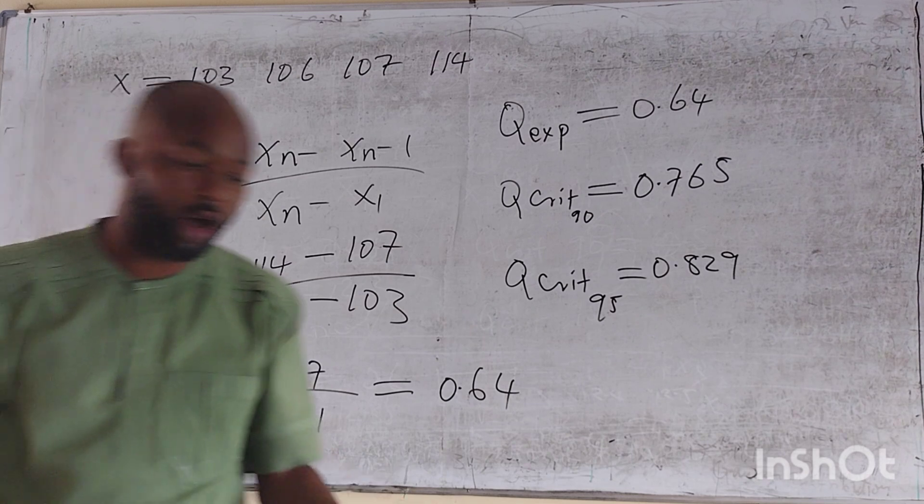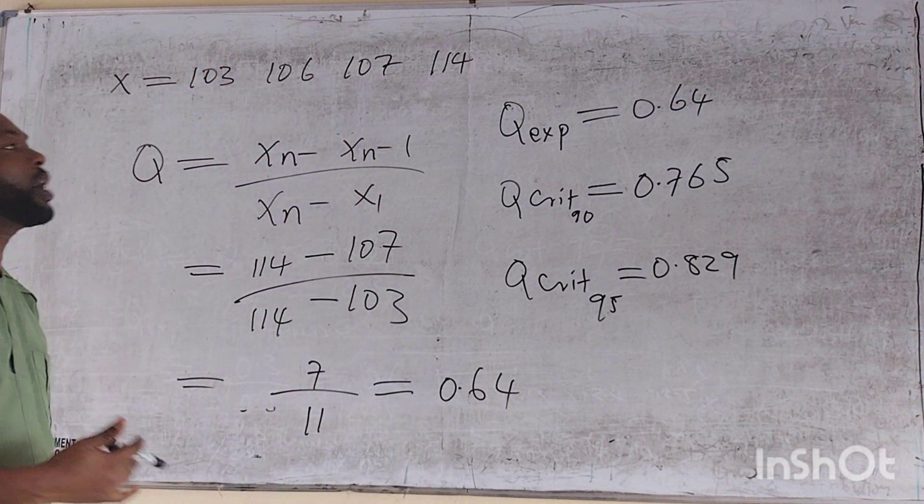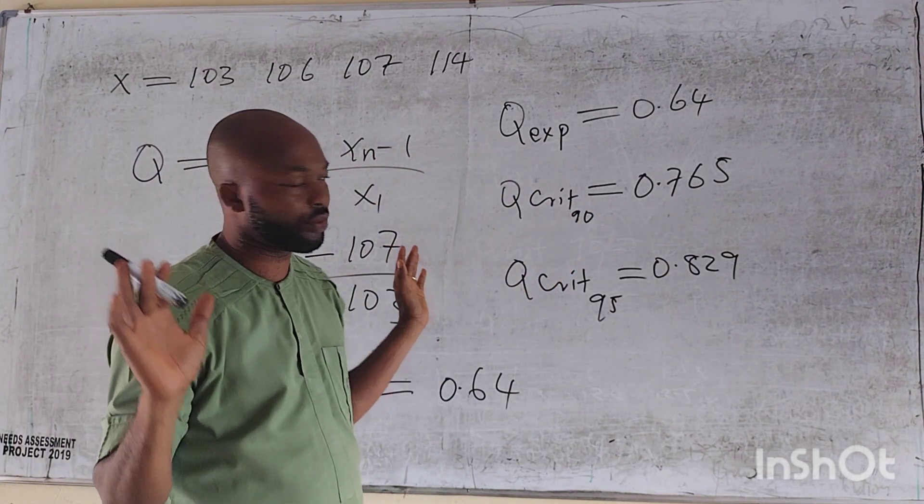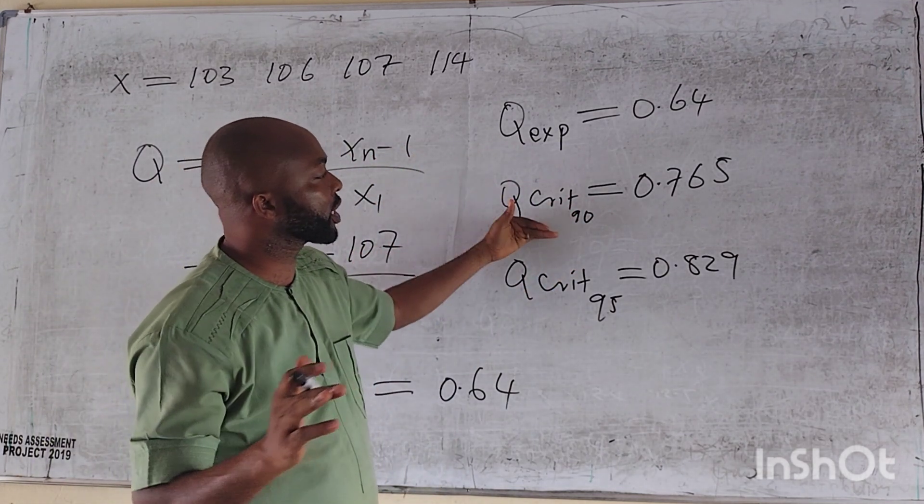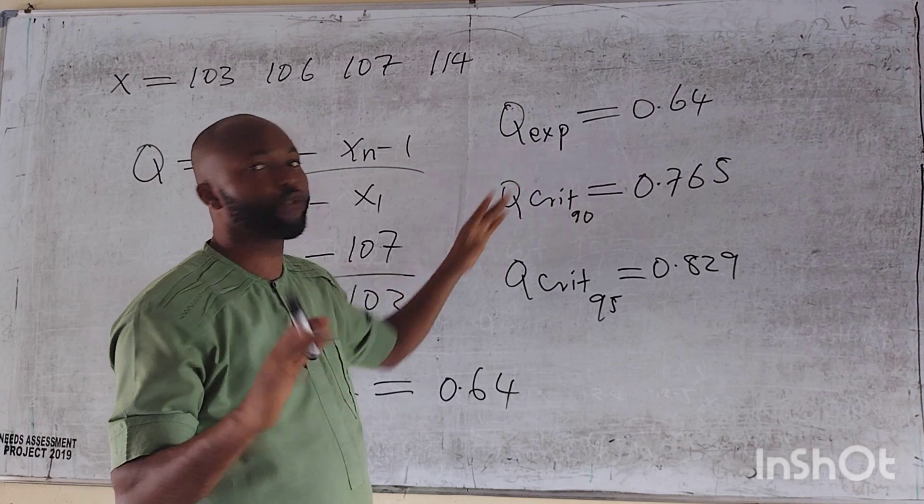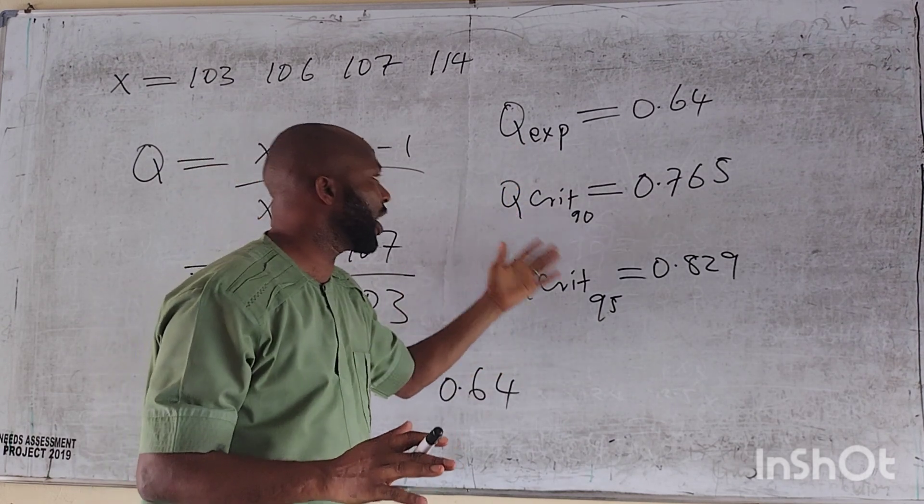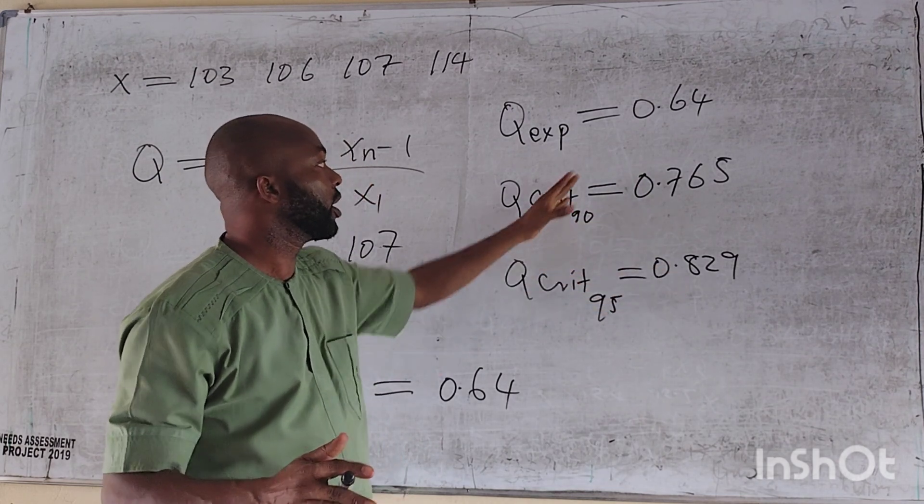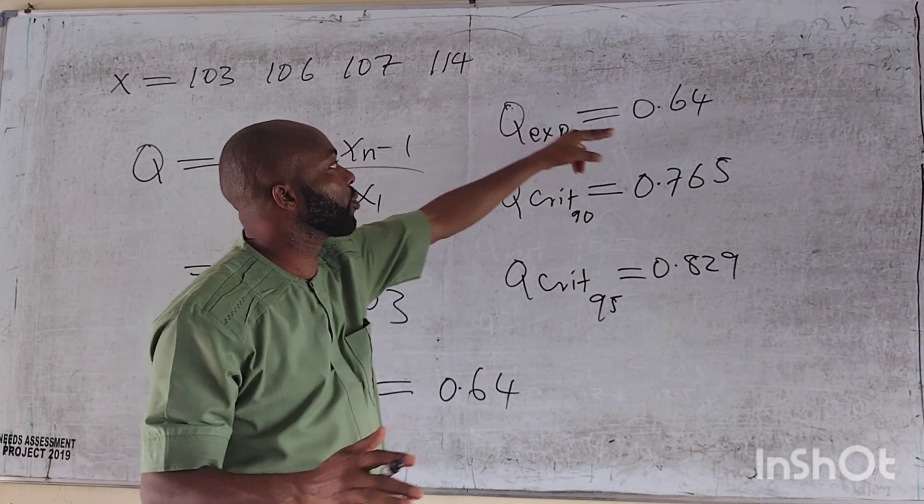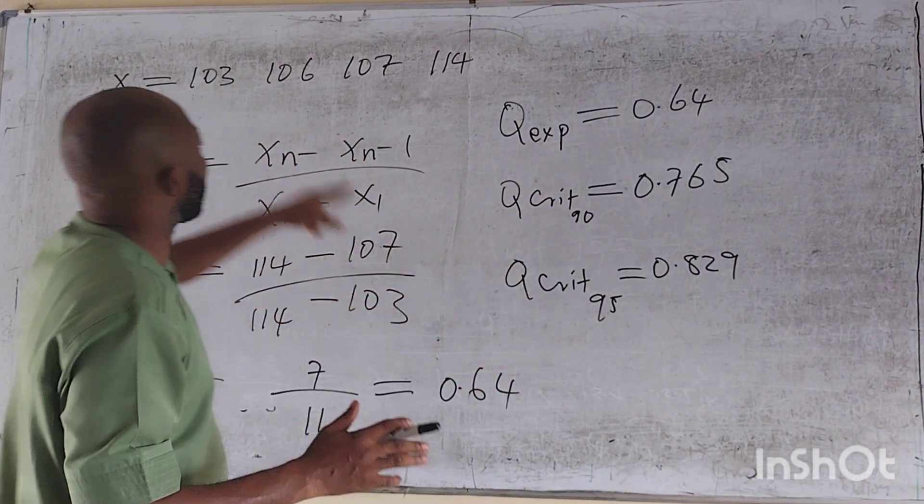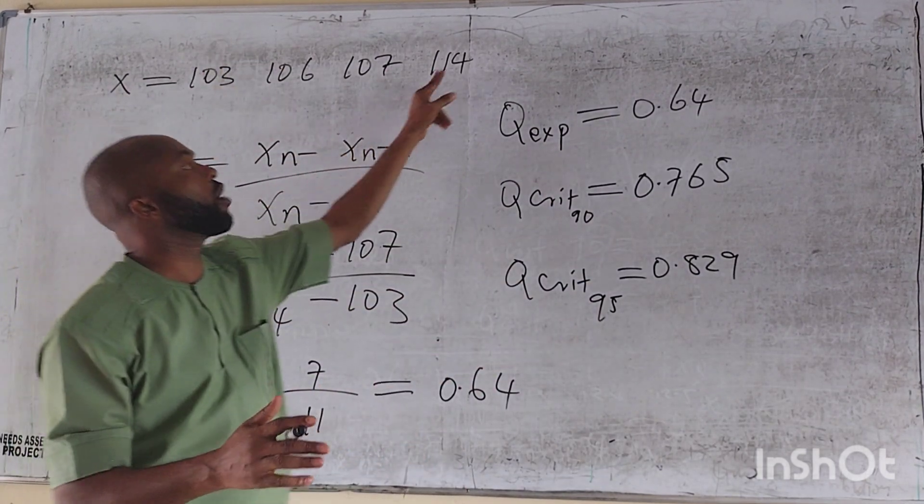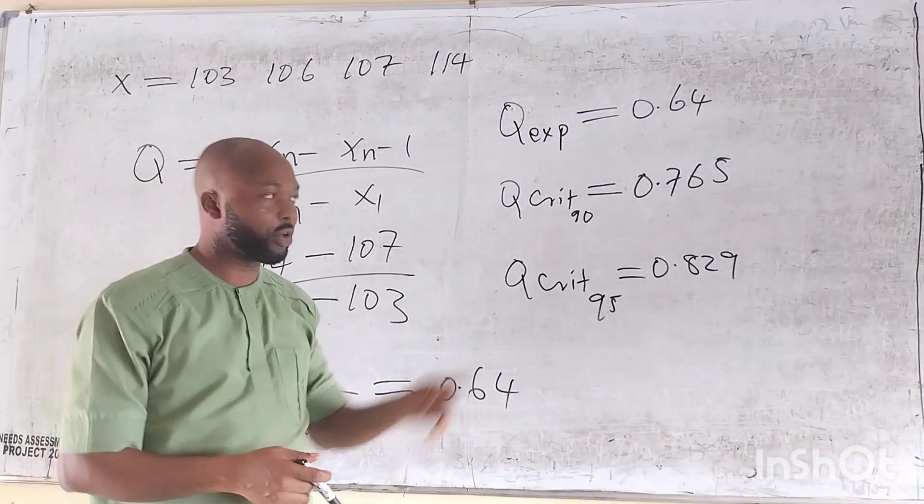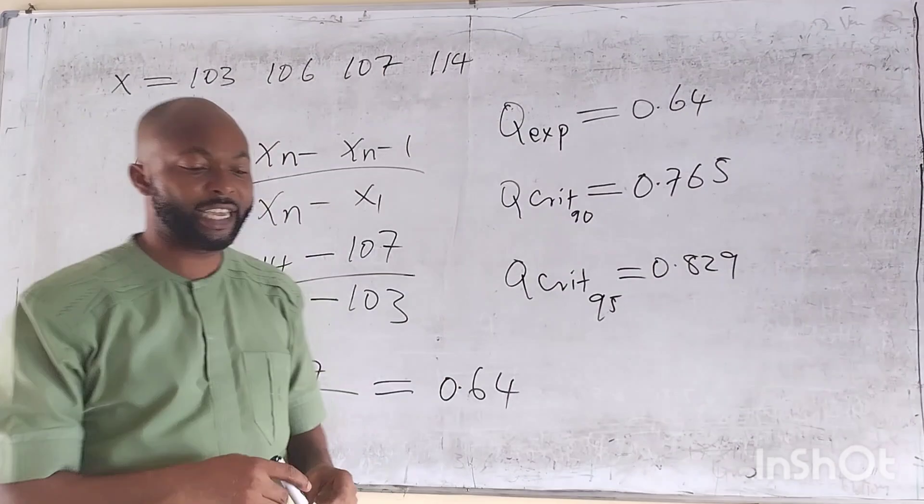So we move on. The question answer is, when the Q-experimental is greater than the Q-critical, we reject the value. But when the Q-critical is greater than the Q-experimental, we retain the value. So from here, the Q-critical 0.7 or 0.8, as the case will be, both of them are larger than 0.6. So the outlier 114 should be retained. It is as a result of random error, but the variable must be retained.